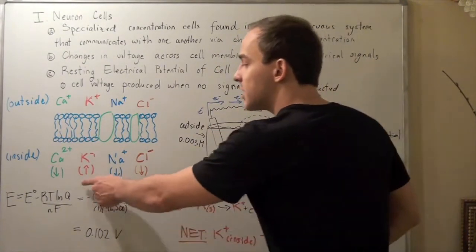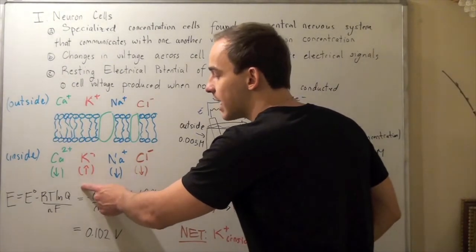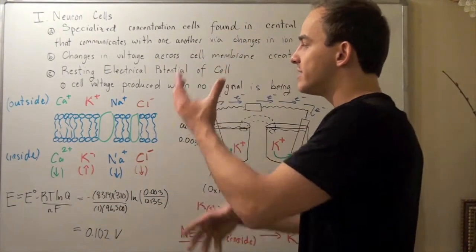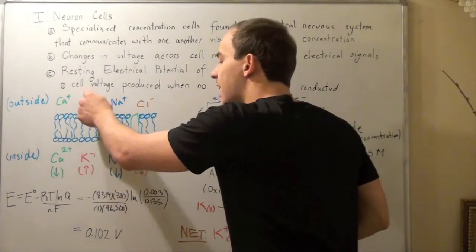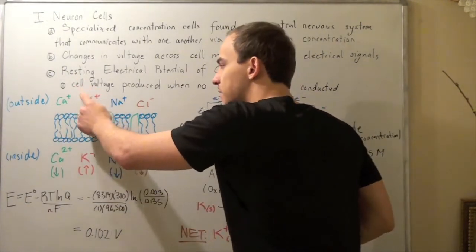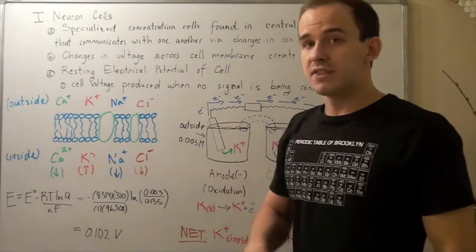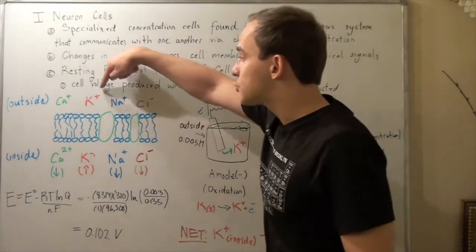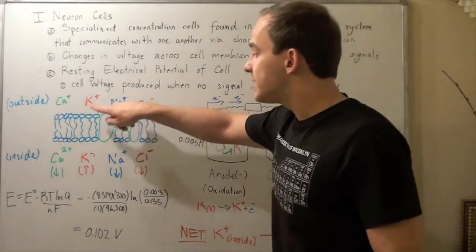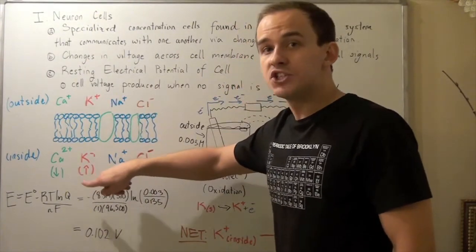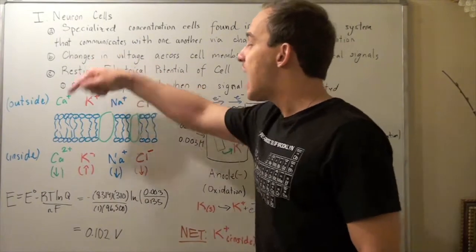And that means these guys will tend to move down their chemical gradient, right? Because there are more of these guys on the outside. So equilibrium will want to establish and these guys will want to move to the outside, down their chemical gradient. Now, electrical gradient is the opposite of that. Because electrons travel this way. Electrons will want to travel to the place where there is more positive charge. That means it's opposite.